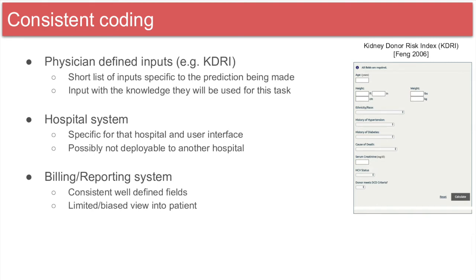The same issues are also present when using a billing or reporting system. A billing system may be nice, because it is consistent across an entire province or hospital network, but each hospital may have its own standards when coding. Also, billing information may not paint the entire picture of a patient, because it only contains a subset of events that occurred and were observed. In any case, this is just the reality, and we need to develop methods to deal with this.